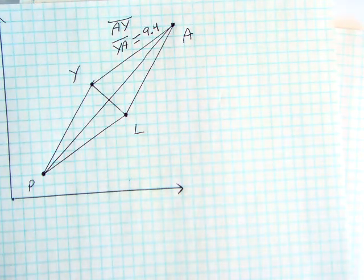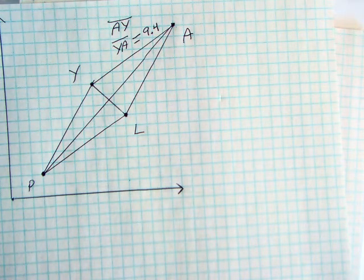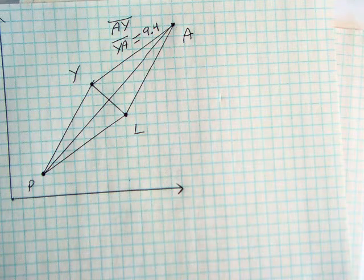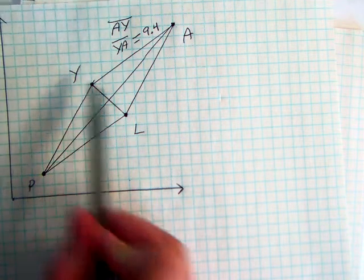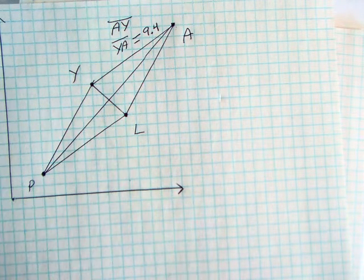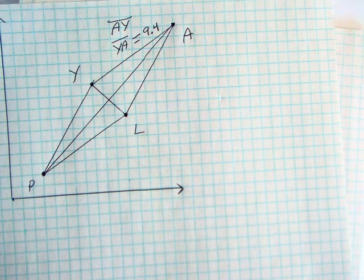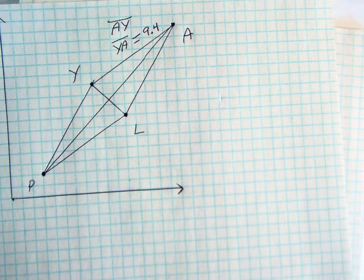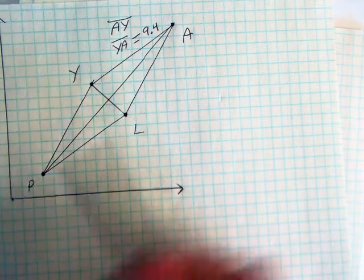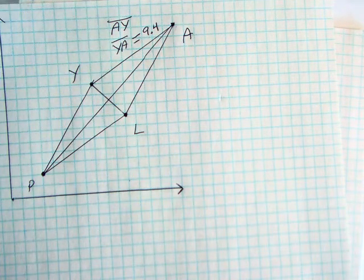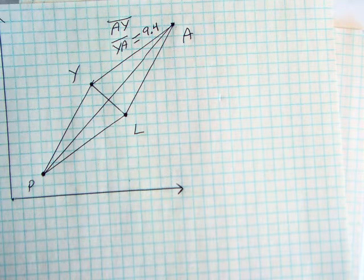Now that we have our diagonals, we use the exact same two formulas to find the length and the slope. So, you would use point Y and L, plug them into the distance formula, get an answer. You would use Y and L, plug them into the slope formula, get an answer. Then, you would go back and do the same thing with P and A. Plug them into both the distance and slope formulas.